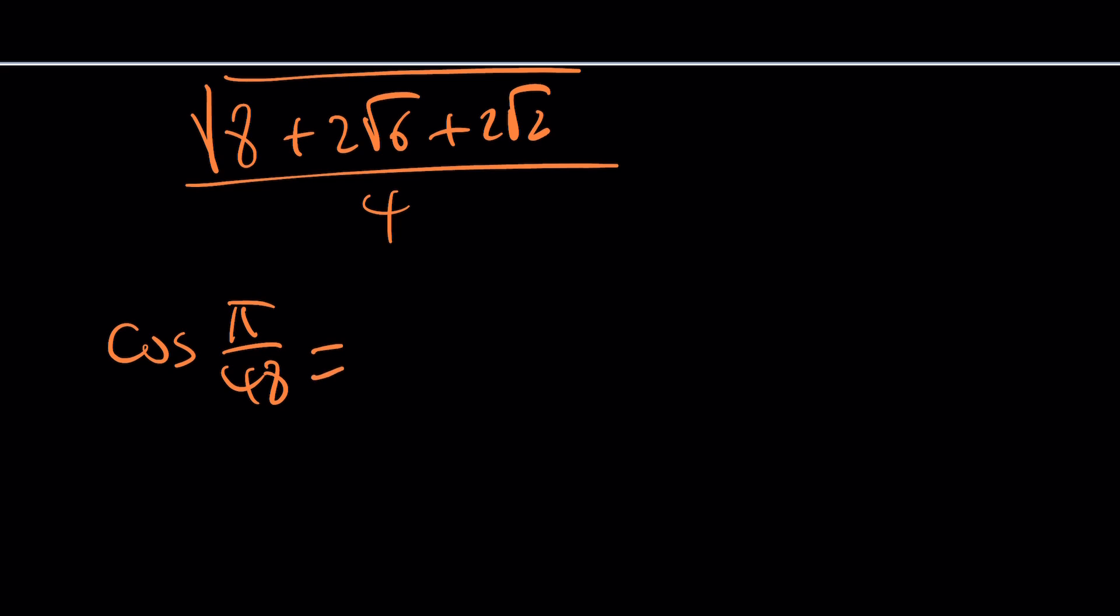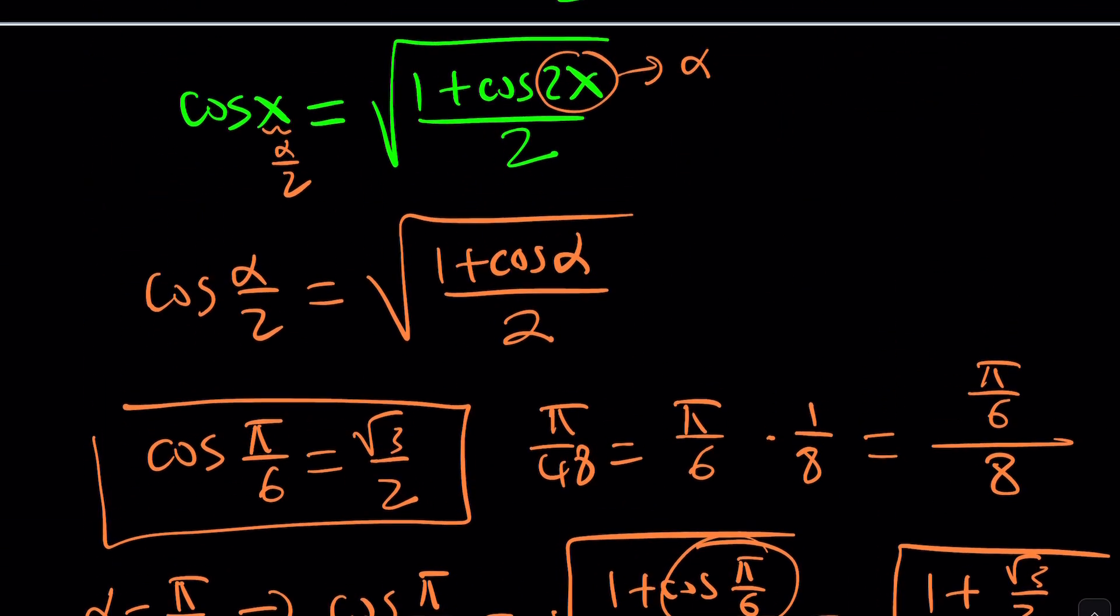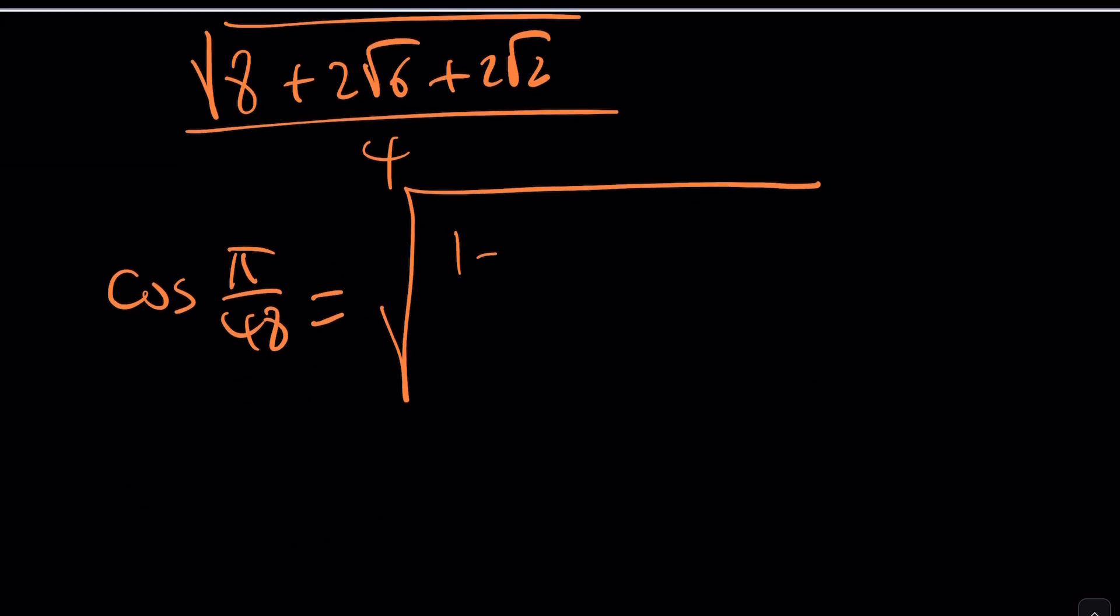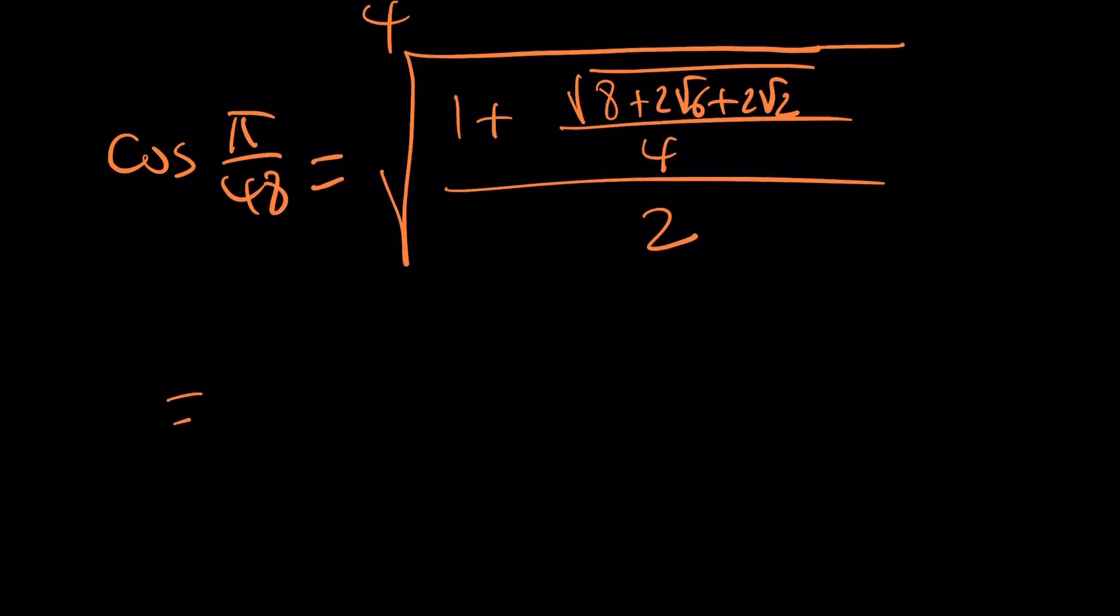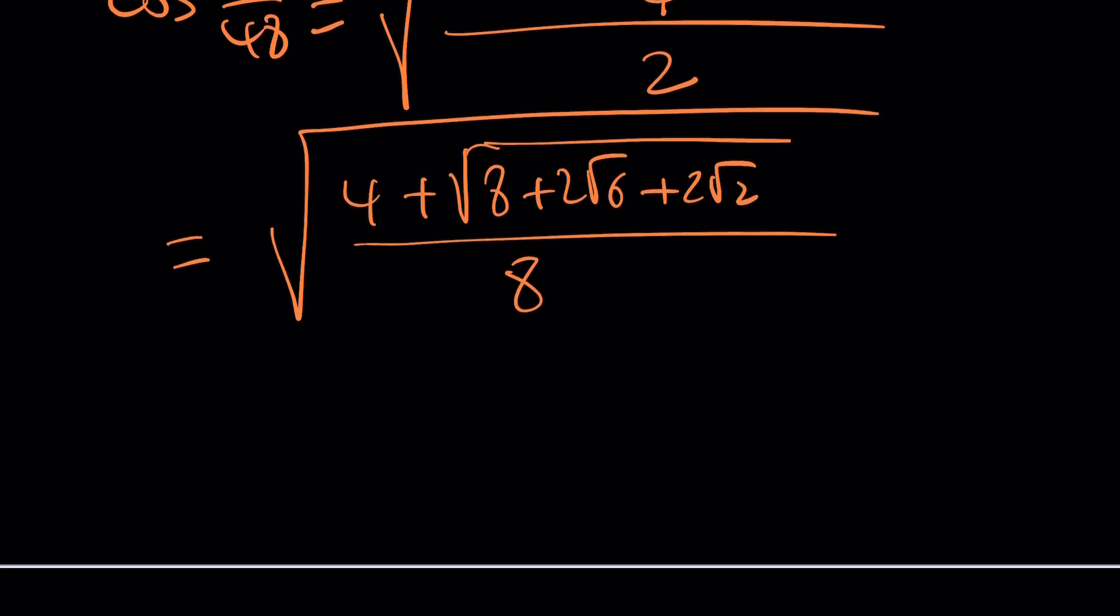Cosine of pi over 48 is going to be the square root of—let's go back to the formula in case you forgot what it is—1 plus this value, square root of 8 plus 2 root 6 plus 2 root 2, divided by 4. And all of that is divided by 2, and you have to square root it. Let's see if we can simplify this a little bit. Add the 4 in there. So that's going to be 4 plus the square root of 8 plus 2 root 6 plus 2 root 2 divided by 8. And you have to square root this again. So a lot of nested radicals here, which we kind of have to denest. But how do you denest them? That's actually a really good question.